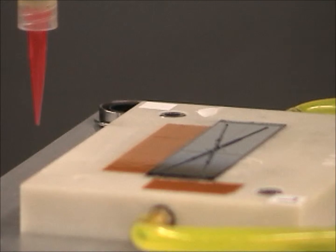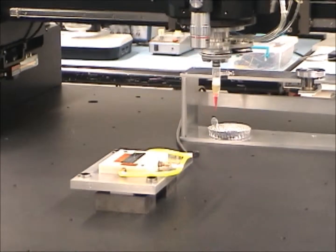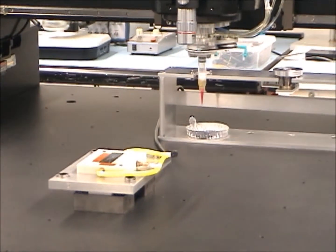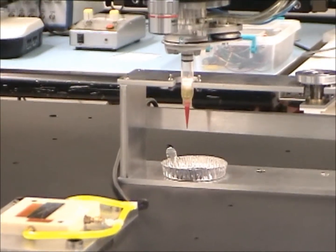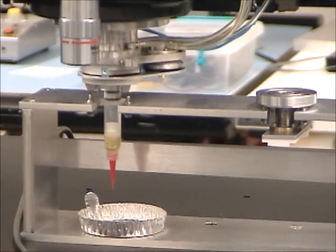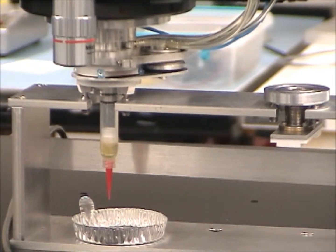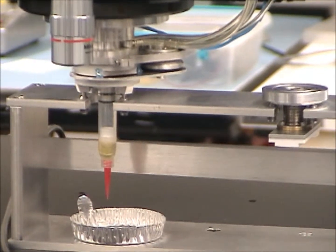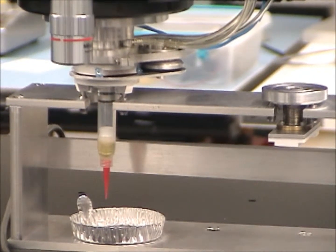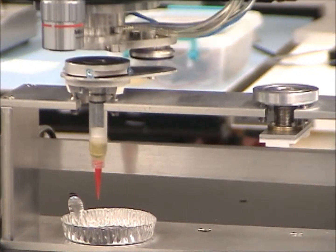And then once it's done depositing the pattern, it moves back to put the glue dispensing tool in the tool rack. Releases the glue dispensing tool, translates over to the vacuum pickup tool.